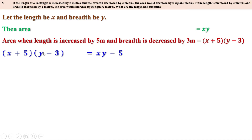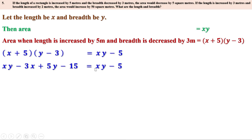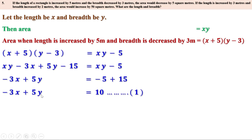Let us multiply: x·y is xy, x·(−3) is −3x, 5·y is 5y, 5·(−3) is −15. So we get xy − 3x + 5y − 15 = xy − 5. xy cancels on both sides. Taking −15 to the other side: −3x + 5y = −5 + 15 = 10. So the first equation is −3x + 5y = 10.